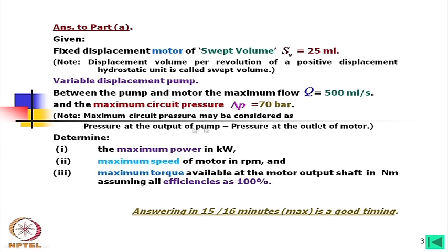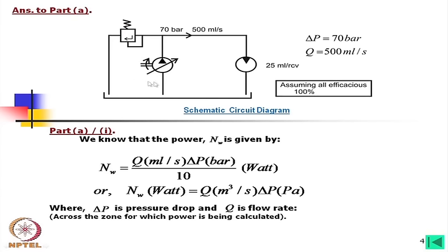The maximum circuit pressure can be considered as the pressure at the output of the pump minus the pressure at the outlet of the motor — in the ideal case assuming no loss in between. The maximum flow Q is 500 milliliters per second and circuit pressure is 70 bar. We draw a circuit diagram showing the variable displacement pump, fixed displacement motor, and pressure relief valve where pressure and maximum flow rate are marked.